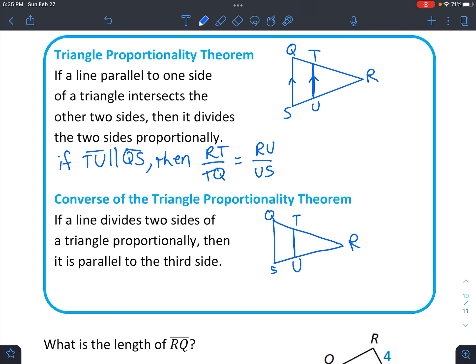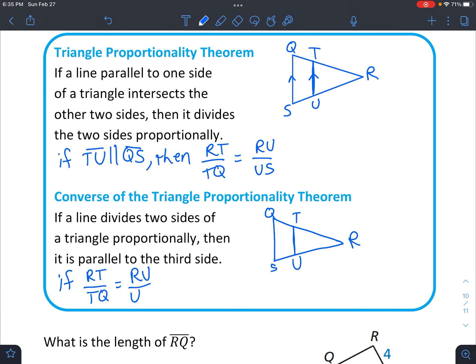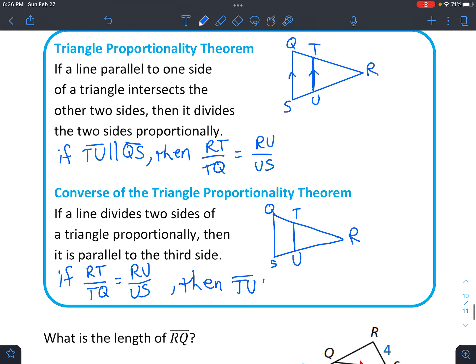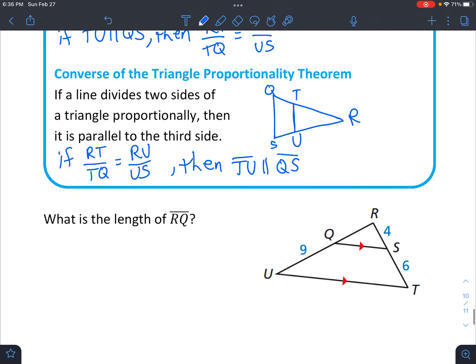so if a line divides two sides of a triangle proportionally, then it is parallel to the third side. So this time we're not given that it's parallel, we're given that the proportions work. And we're just going to list those same proportions that we just talked about. Then you can conclude that TU is parallel to QS.